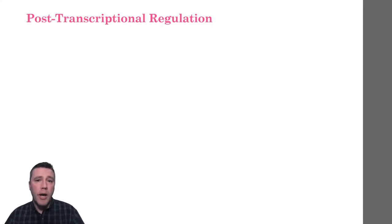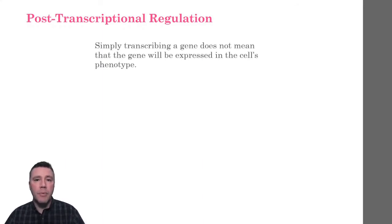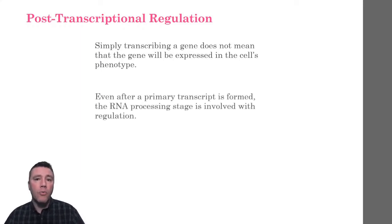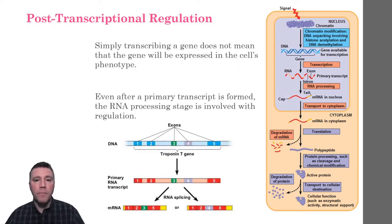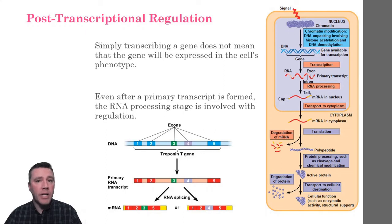Just because a gene is transcribed doesn't mean that it will be expressed in the cell's phenotype. The expression of a protein-coding gene is ultimately gauged by how much of a functional protein a cell makes. Researchers are discovering more and more regulatory mechanisms that operate at various stages of transcription. One mechanism by which cells regulate expression is alternative RNA splicing. This model illustrates the gene for troponin T expressed in skeletal and cardiac muscle. This single gene can be spliced in alternative ways so that, when translated, different but related muscle proteins are produced.